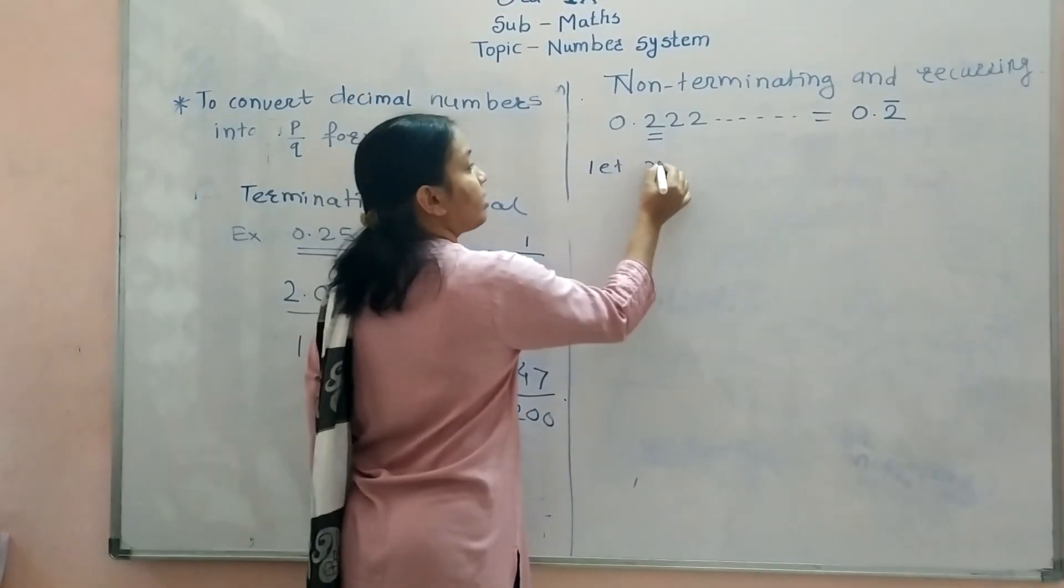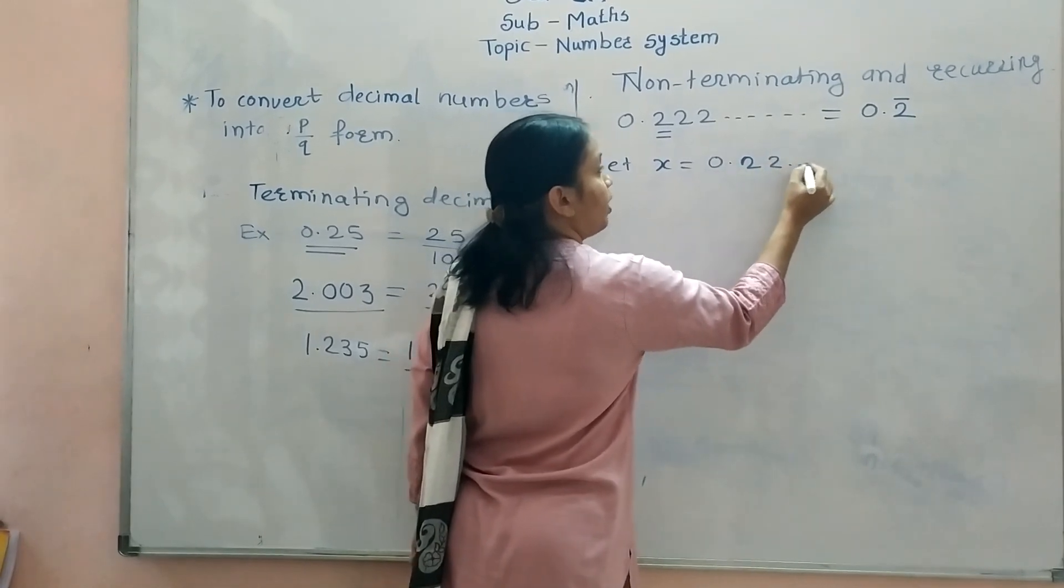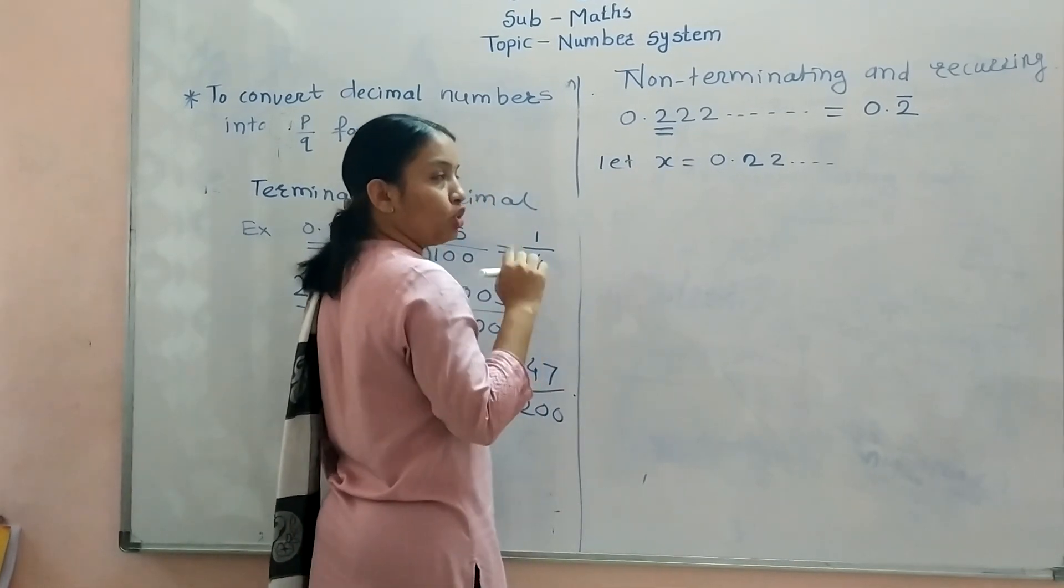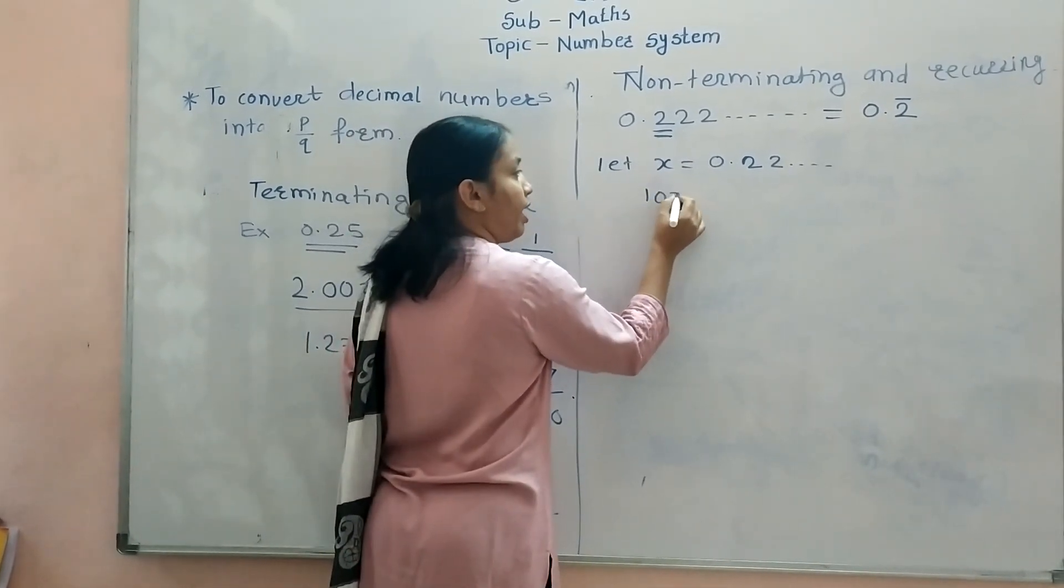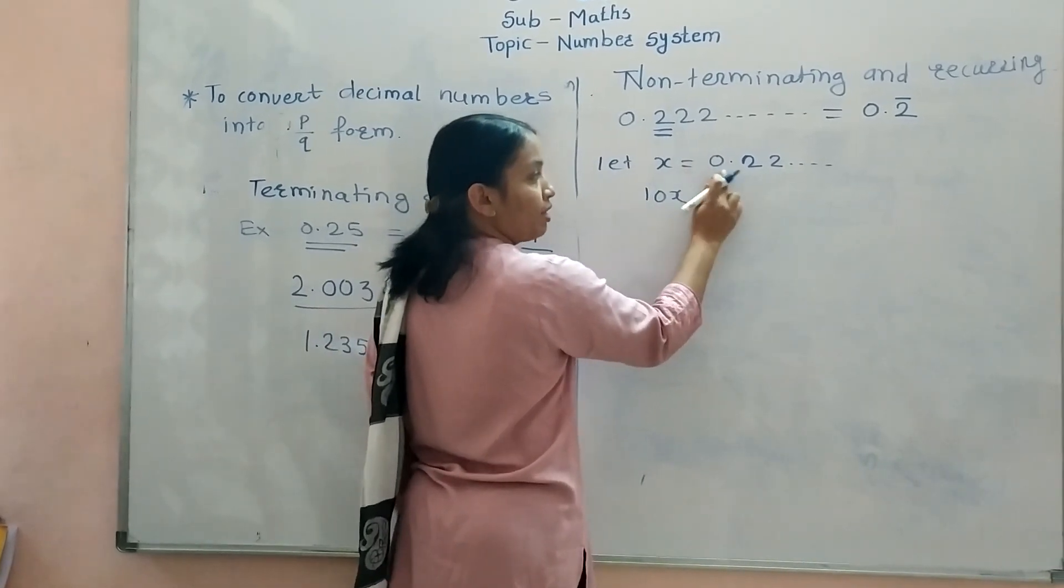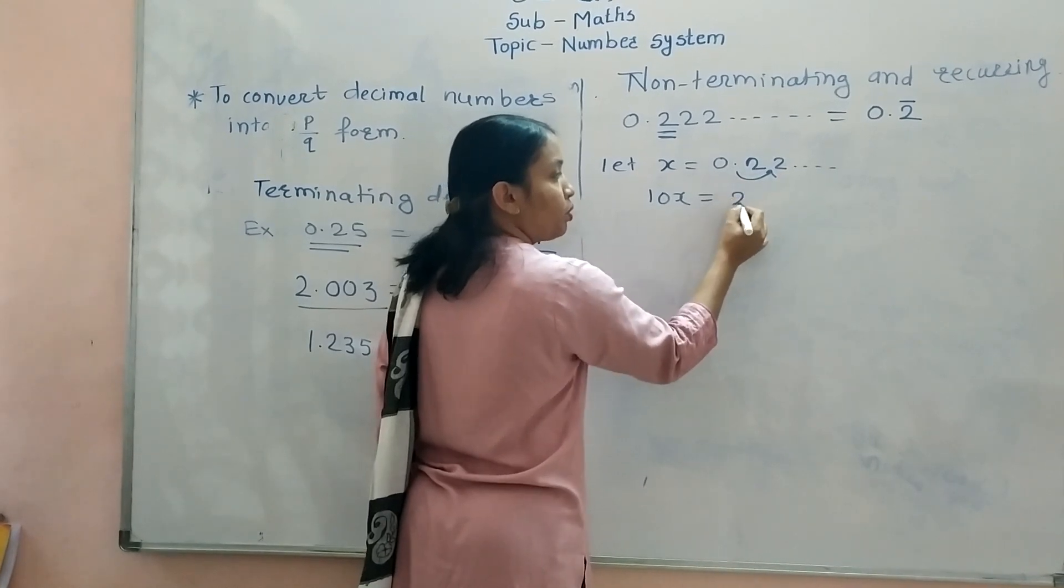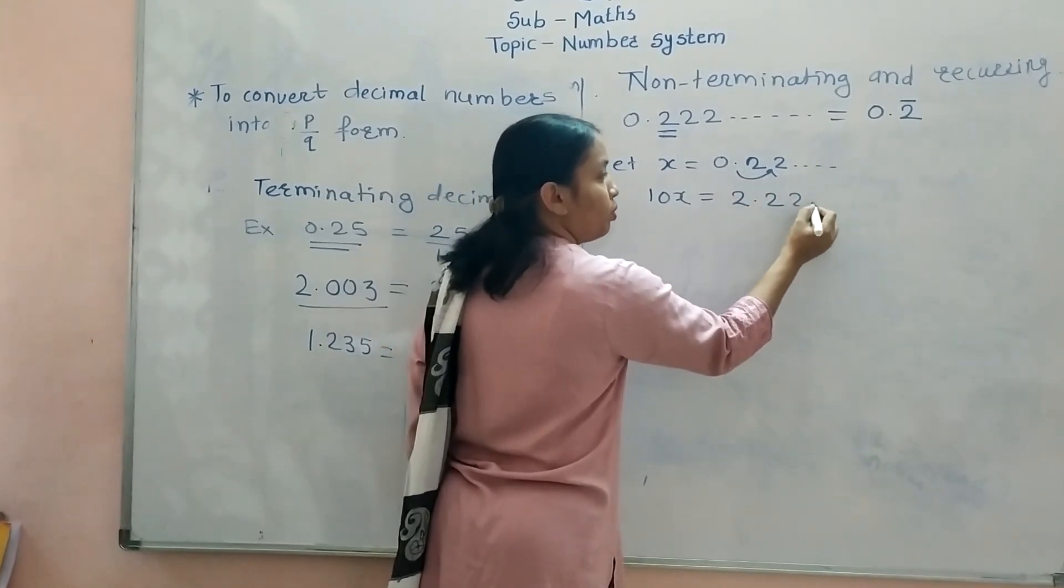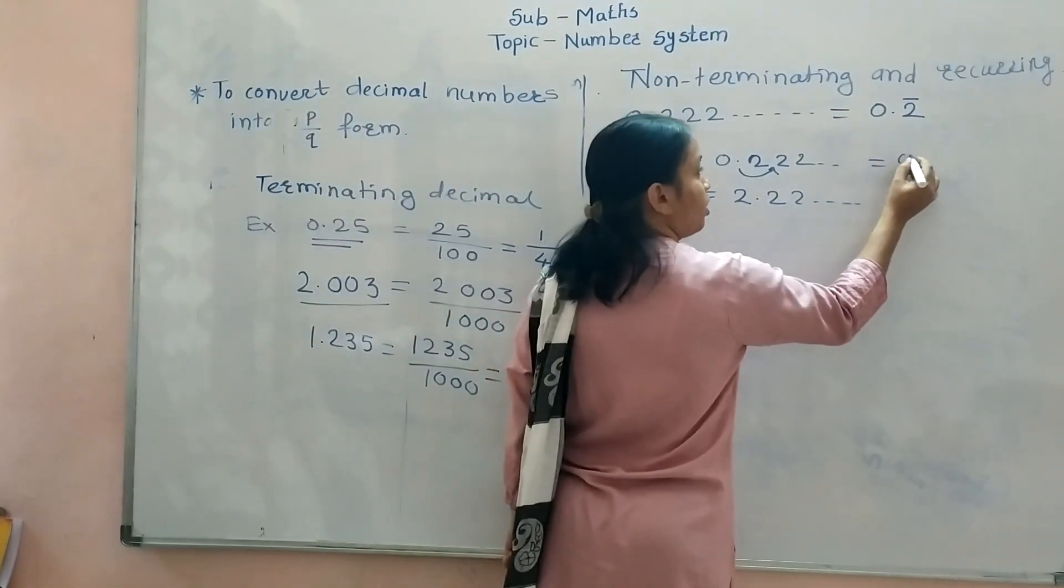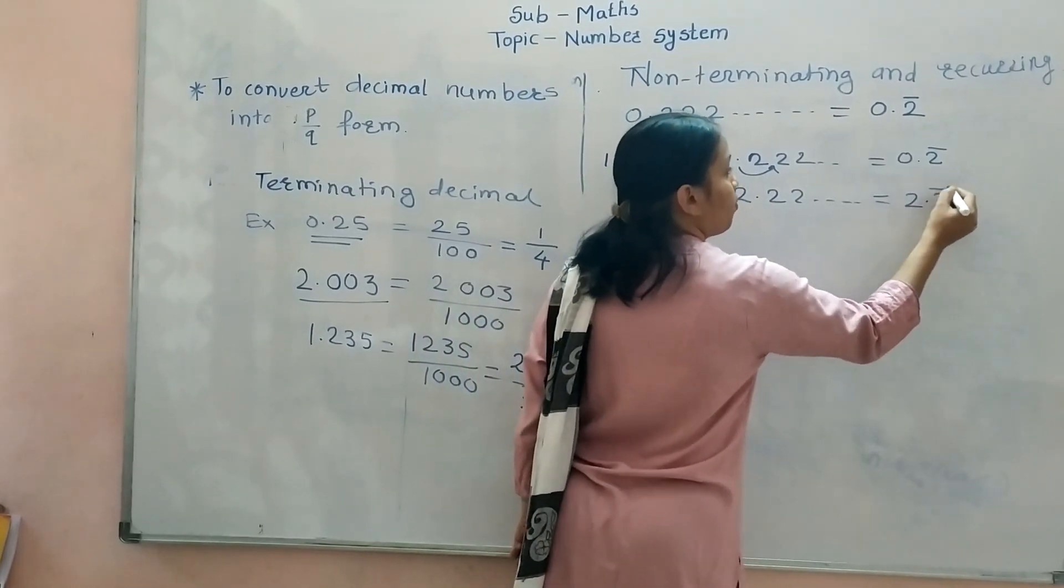Now, how to solve? Let x equal to 0.222... So, now only one digit is repeating, that is 2. Therefore, take 10x. What you have to do? You have to multiply this x by 10. If you are multiplying this number by 10, this decimal point moves here. Therefore, 2.222... You can write in short as 0.2 bar, and this in short you can write 2.2 bar.